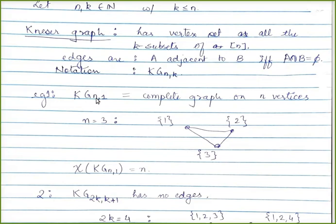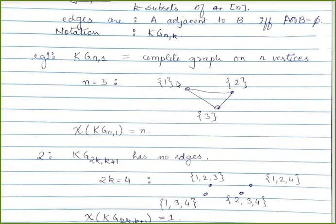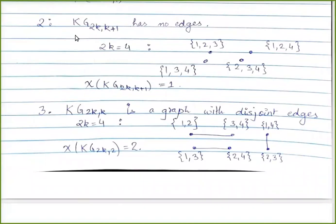Let's see some examples. KG_{n,1} has all 1-subsets of [n] as vertices — these are just the numbers 1 through n — and any two distinct vertices are adjacent because any two distinct singletons are disjoint. So KG_{n,1} is the complete graph K_n. For n=3, the vertices are 1, 2, 3 and 1 is connected to 2, 1 is connected to 3, and 2 is connected to 3.